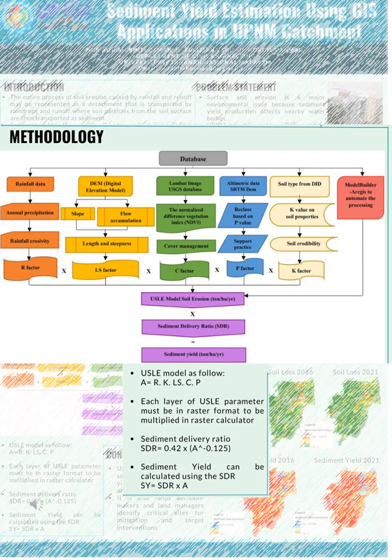The methodology is carried out by providing a database of the parameters of the Universal Soil Loss Equation (USLE) method to determine soil erosion in the catchment area. The layer parameters of the RUSLE model are: rainfall erosivity, slope length and steepness, land cover management, support practice, and soil erodibility. Rainfall erosivity factor was obtained from rainfall data; slope length and steepness factor from DEM; cover management factor from Landsat Image USGS database; support practice factor from reclassed DEM; and soil erodibility from the Department of Irrigation and Drainage Malaysia.